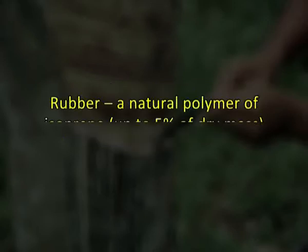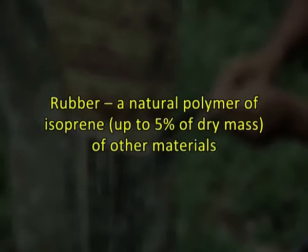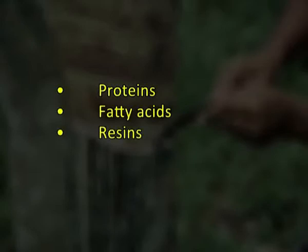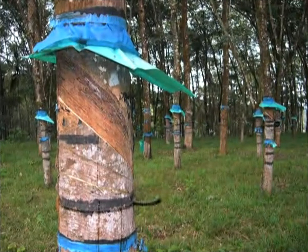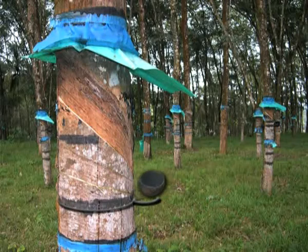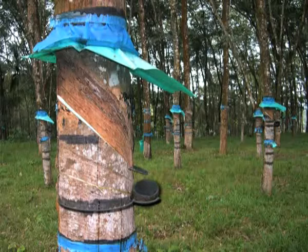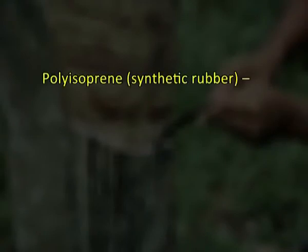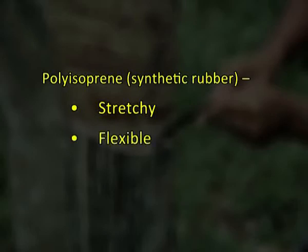It is a natural polymer of isoprene with a small percentage — up to five percent of dry mass — of other materials such as proteins, fatty acids, resins, and some inorganic salts. Rubber is derived from latex, a milky colloid produced by some plants. The latex is collected by the tapping method, where an incision is made into the bark of the tree to get the sticky milky-colored latex, which is collected and refined into usable rubber. Polyisoprene synthetic rubber can also be produced. It is normally very stretchy, flexible, and extremely waterproof.